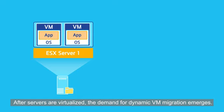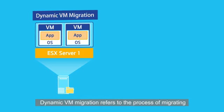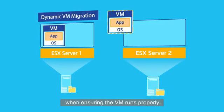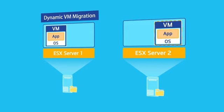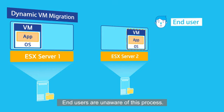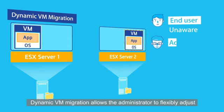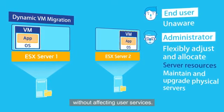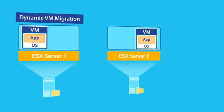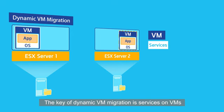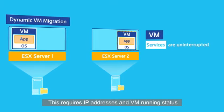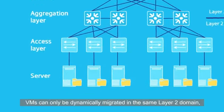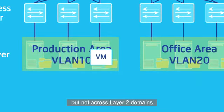After servers are virtualised, the demand for dynamic VM migration emerges. Dynamic VM migration refers to the process of migrating one VM from one physical server to another physical server while ensuring the VM runs properly. End users are unaware of this process. Dynamic VM migration allows the administrator to flexibly adjust and allocate server resources, or maintain and upgrade physical servers without affecting user services. The key of dynamic VM migration is that services on VMs cannot be interrupted during migration. This requires IP addresses and VM running status such as the TCP session status to remain unchanged. VMs can only be dynamically migrated in the same layer 2 domain, but not across layer 2 domains.